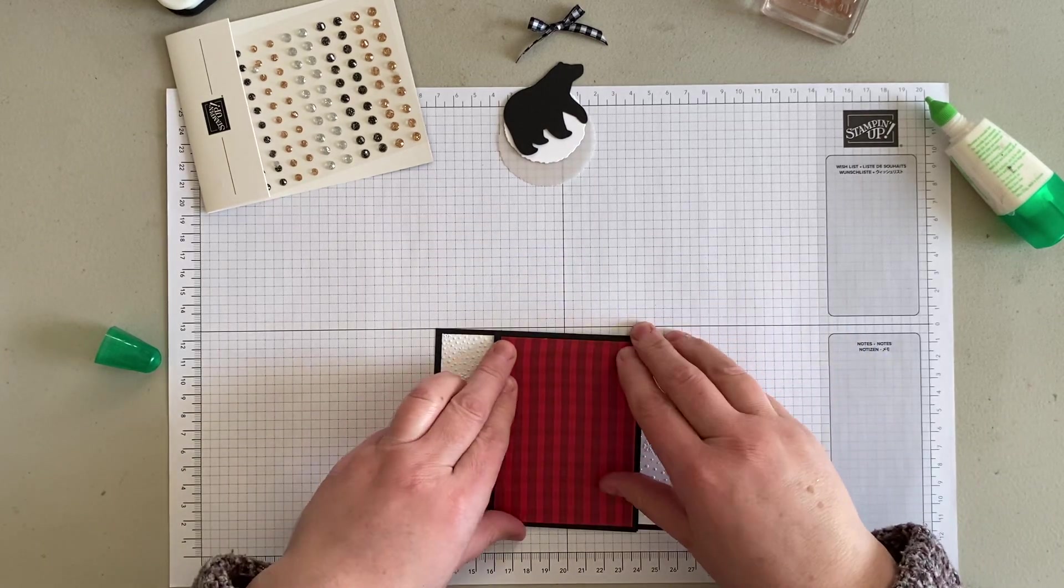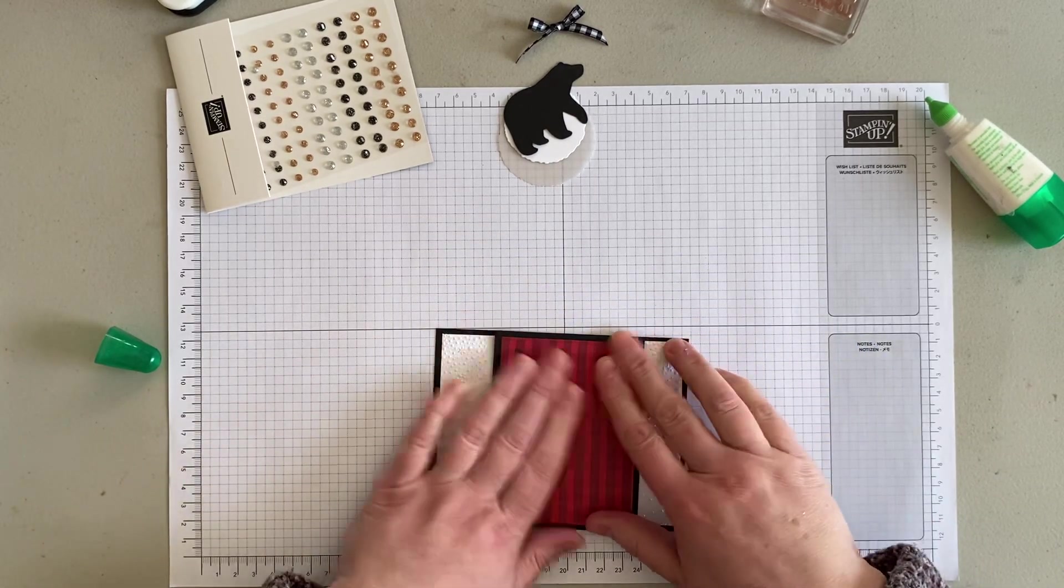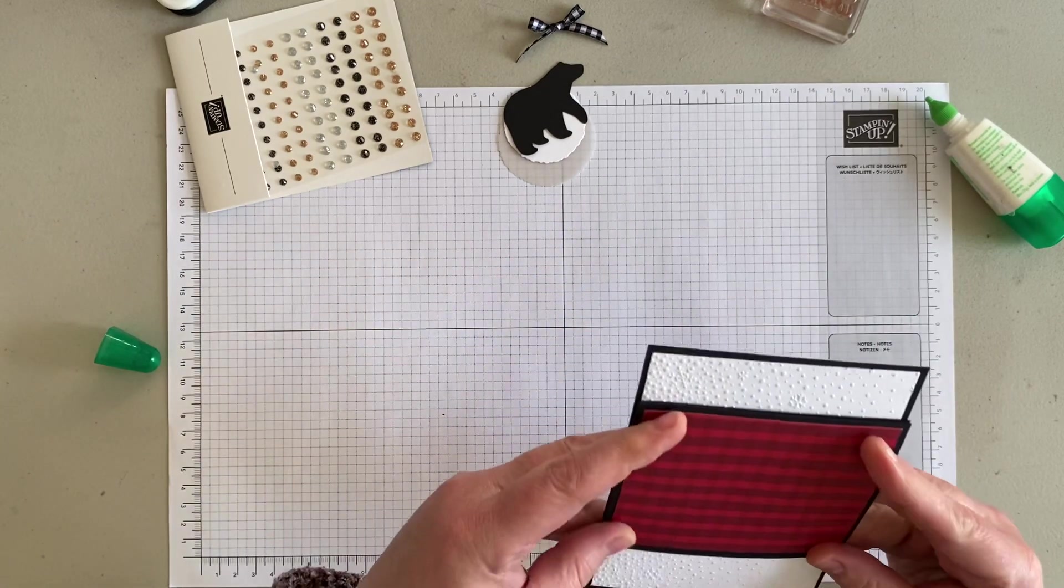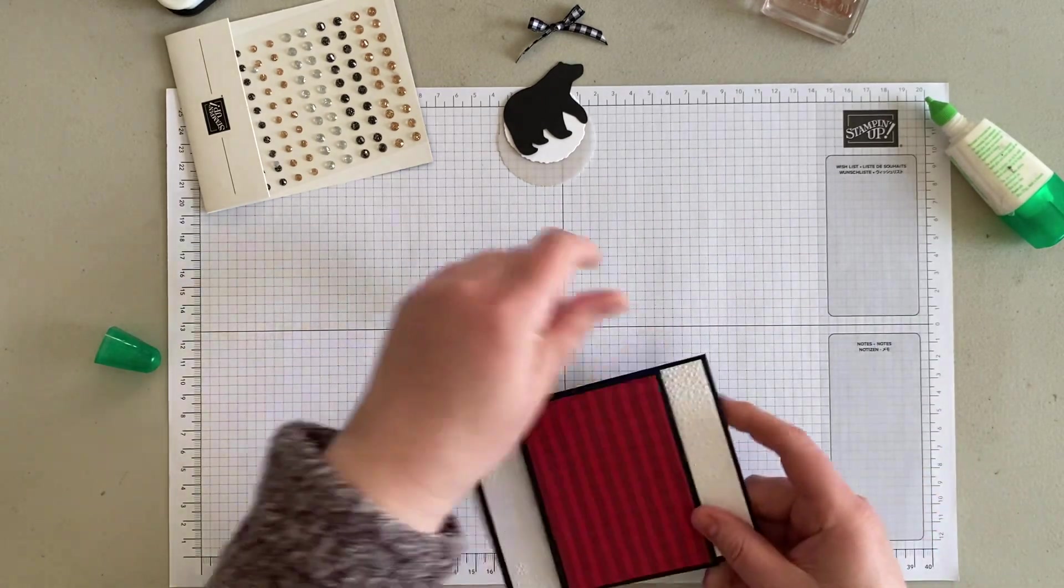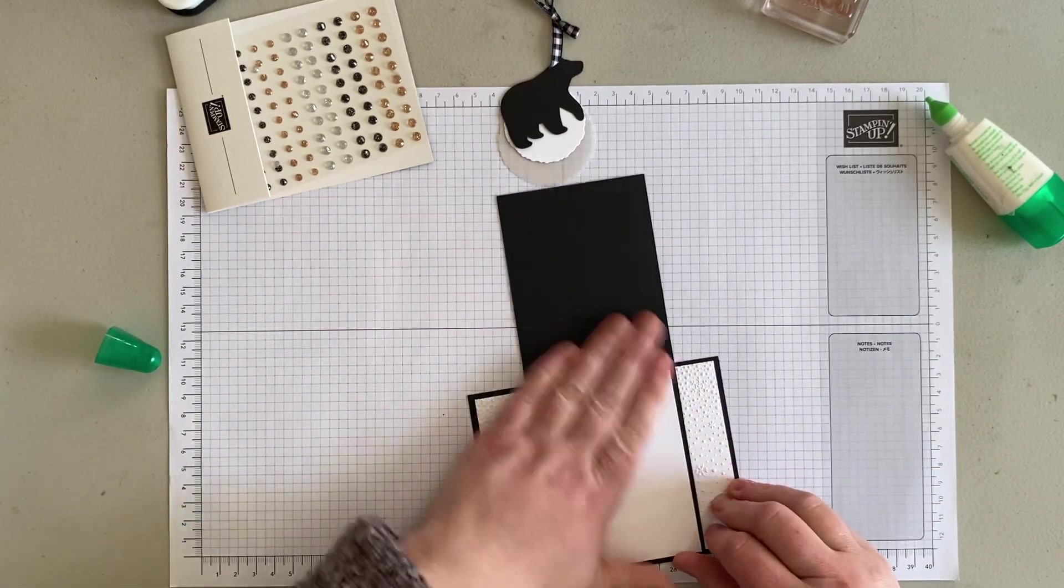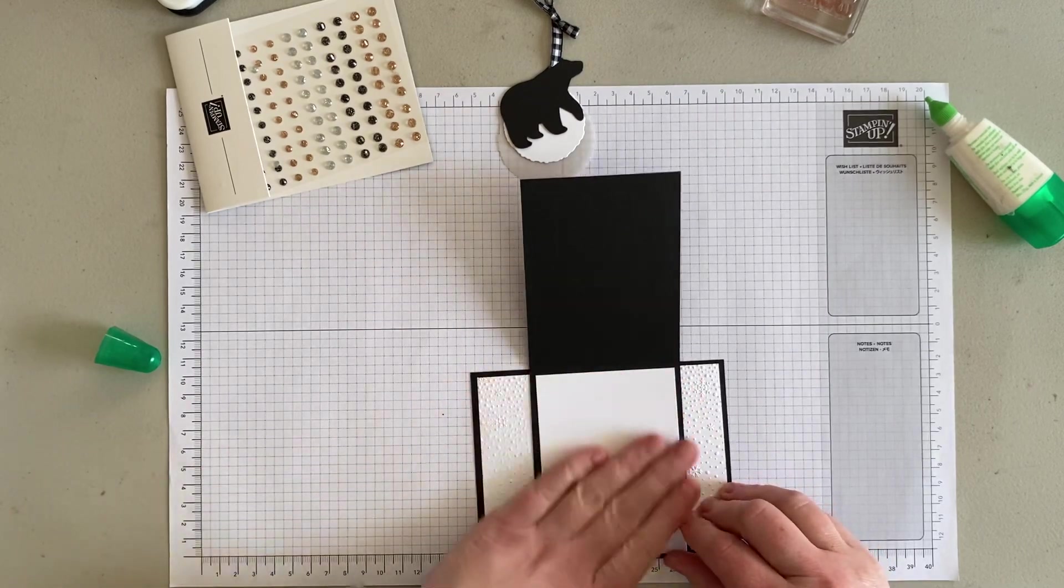I love the liquid glue because if it goes on crooked, you still have a little bit of time. I think I'm too wide on this side, but that's okay.